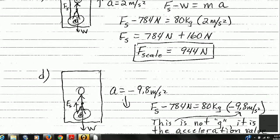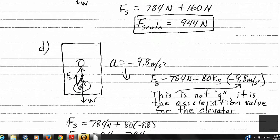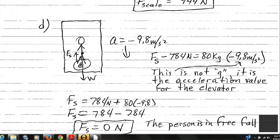Now consider the unfortunate circumstance where the cable breaks — the elevator accelerates downward at minus 9.8 meters per second squared. Writing F = ma: force of the scale minus the weight of the person on the left, and mass times acceleration on the right. The object is just the person. Completing the calculation: 80 times negative 9.8 equals negative 784. We find the scale supplies zero force to the person. The person is in free fall and there is no contact force between the scale and the person's feet. Those are elevator problems — practice some on your own and ask questions.